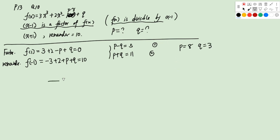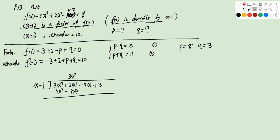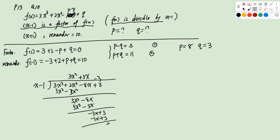You can verify this using long division. Dividing 3x³ + 2x² - 8x + 3 by x - 1 gives 3x² + 5x - 3, with remainder 0, confirming x - 1 is a factor. You can similarly verify the remainder of 10 when dividing by x + 1.